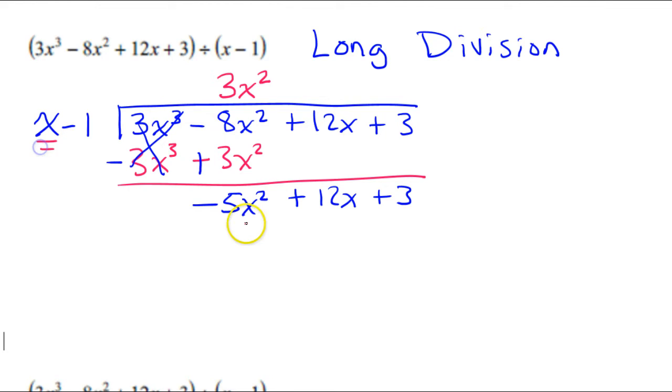So again, I'm looking at the x, and now I'm looking at negative 5x squared. So x times what will be negative 5x squared? Well, that's going to be negative 5x. x times negative 5x will give me negative 5x squared.